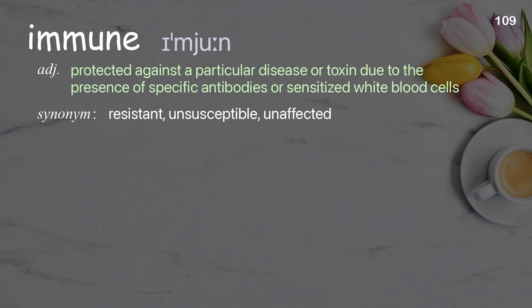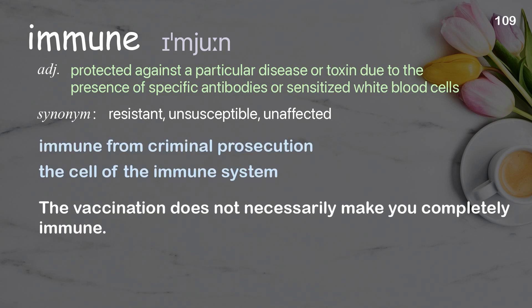Immune: protected against a particular disease or toxin due to the presence of specific antibodies or sensitized white blood cells. Examples: immune from criminal prosecution, the cell of the immune system. The vaccination does not necessarily make you completely immune.